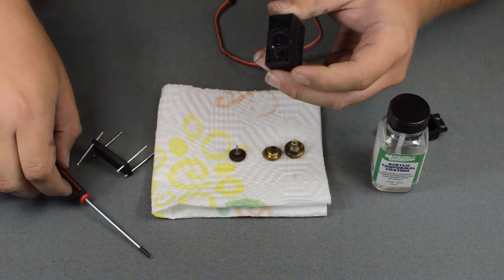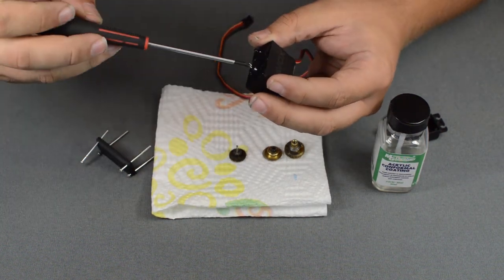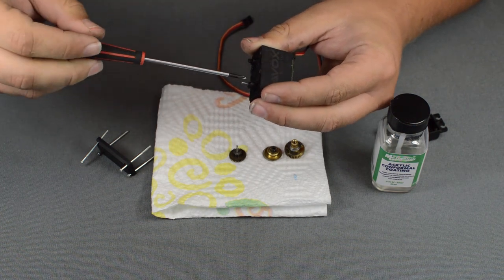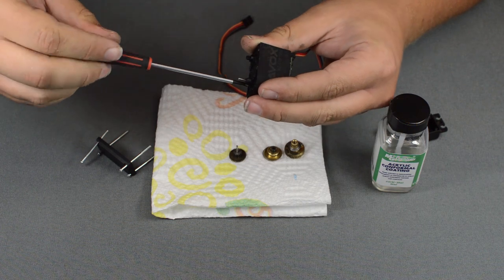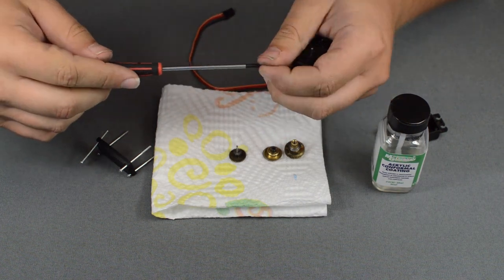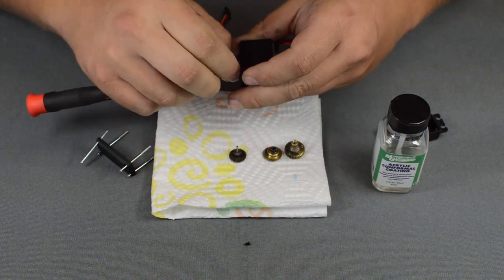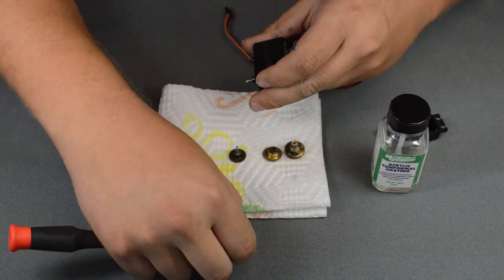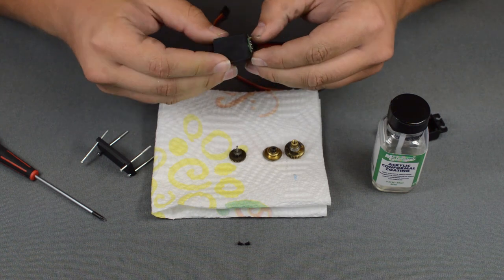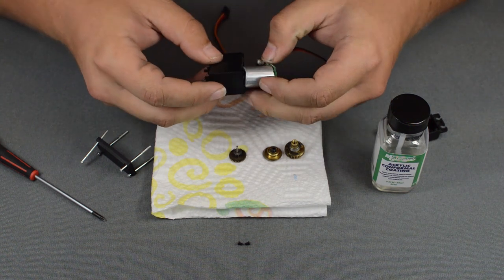And then there's two screws right in here that actually hold the servo motor on. You're going to undo those. Don't lose those because those are tiny, and that will allow you to pull the board and everything apart.